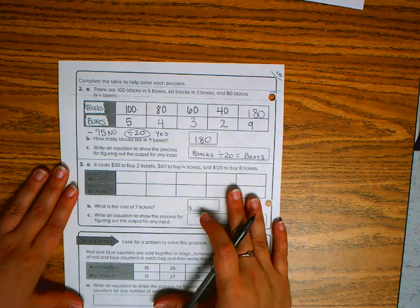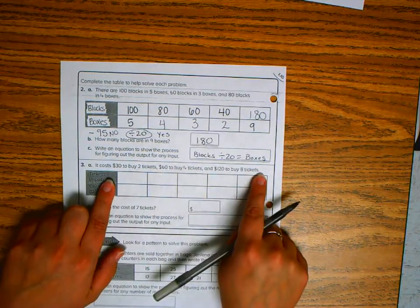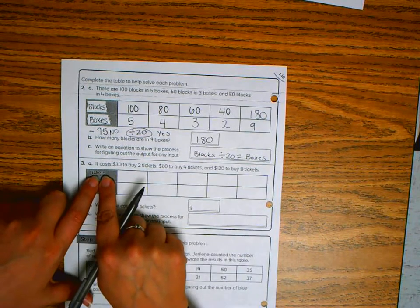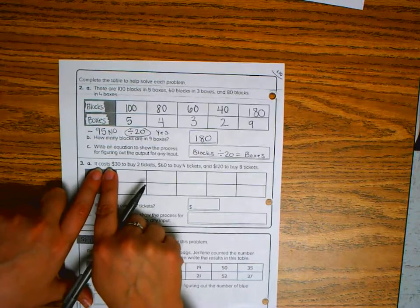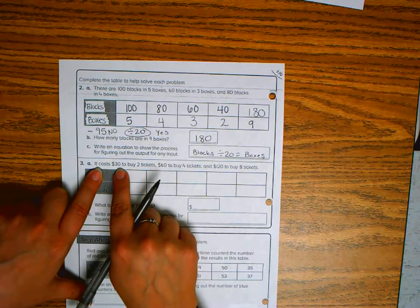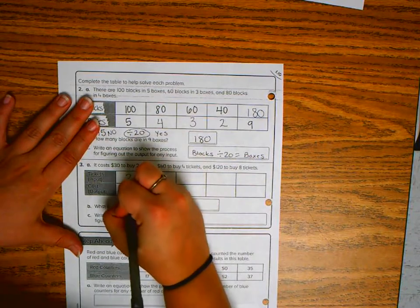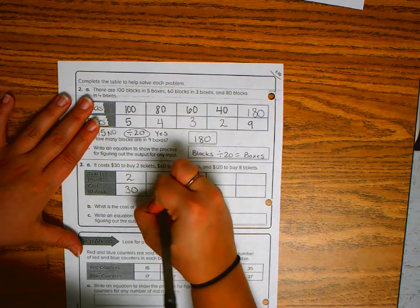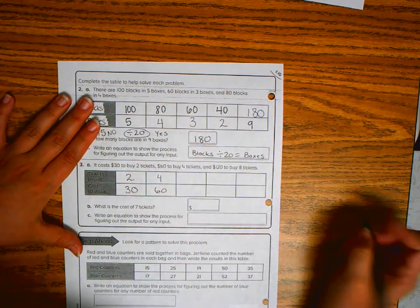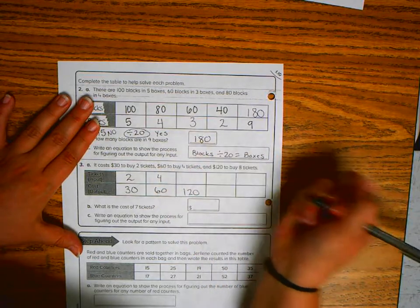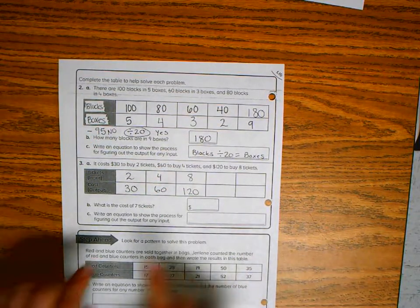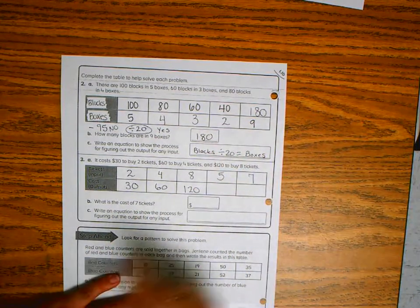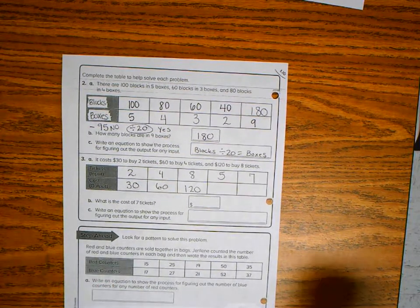This next part gives you all your information, but make sure you are reading carefully, because your input is the number of tickets and your output is the cost. In this problem, it words it backwards. It costs thirty dollars to buy two tickets, so two tickets cost me thirty dollars. It costs sixty dollars to buy four tickets, and one hundred twenty dollars to buy eight tickets. It wants to know the cost of seven tickets. So we can complete our table.